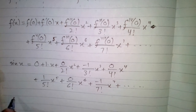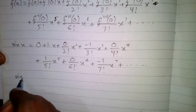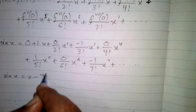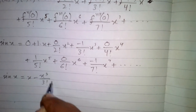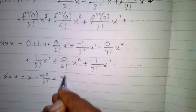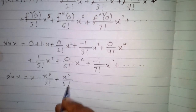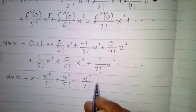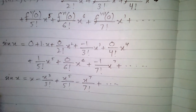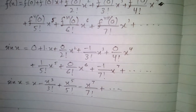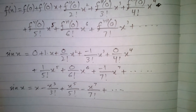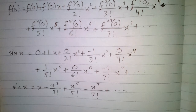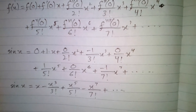After simplifying, we have sine x equal to x minus x cubed upon 3 factorial, plus x to the 5th upon 5 factorial, minus x to the 7th upon 7 factorial, and so on. This is the Maclaurin series of sine x.